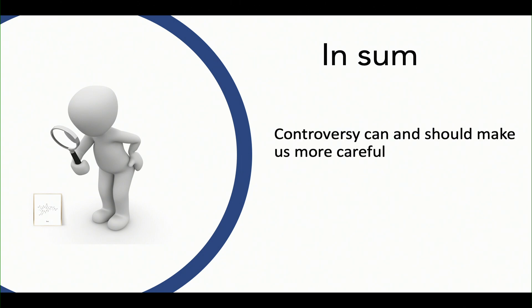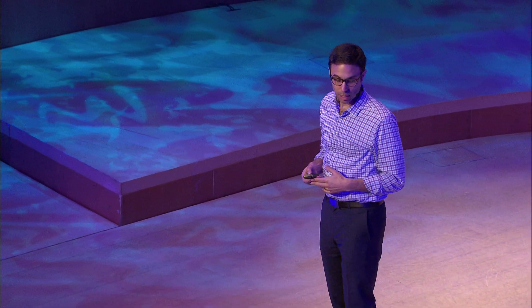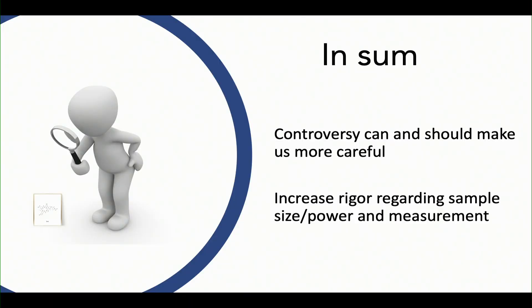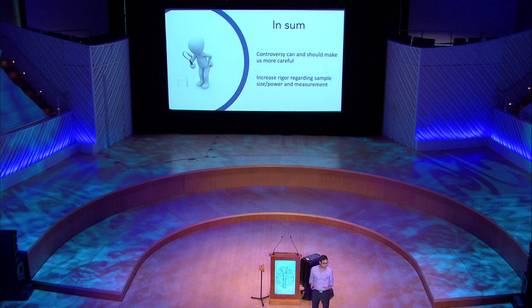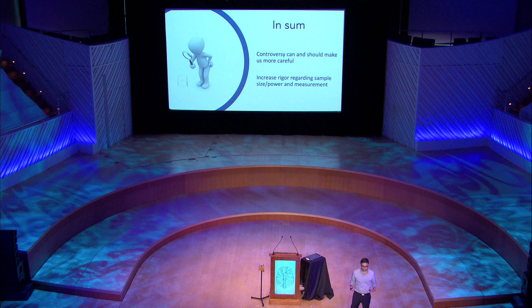To summarize: controversy can and should make us more careful. This is not just about oxytocin — it's about everything. We were all very excited and we should continue to be, but now let's be more careful. We need to increase rigor regarding sample size and power, and we need to think carefully about measurement. Don't just power ahead with 24 international units because everyone did, and don't just choose a measurement strategy because that group did it — figure it out, learn more about it, and justify the decisions you make.